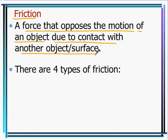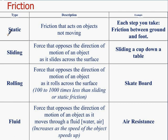There are four types of friction. The first is static friction. Static friction acts on objects that are not moving. For example, if you are sitting in a chair, you have static friction occurring between you and the chair. Each step you take, there is friction between your foot and the ground.